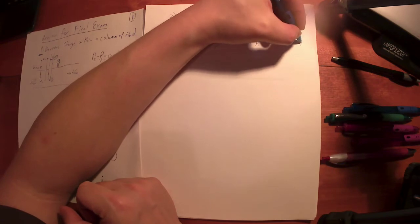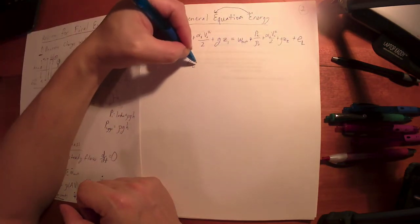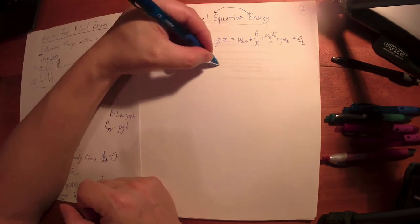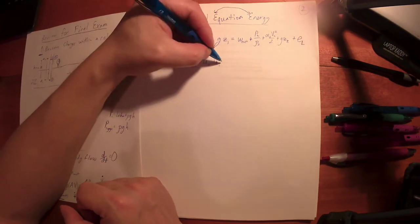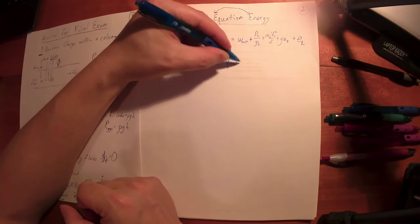All of the mechanical energy in is equal to all the mechanical energy out plus the thermal energy lost, e loss. Again, e loss represents the change in what we call the internal energy.